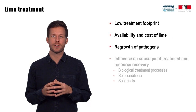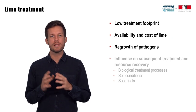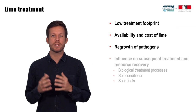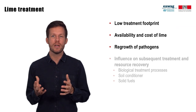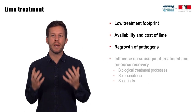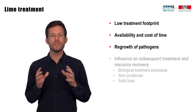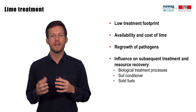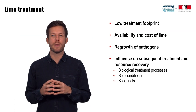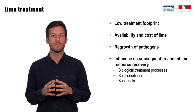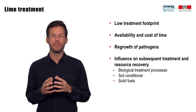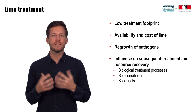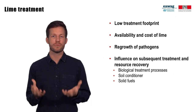Another important consideration is that lime treatment does not reduce sludge volume — in contrast to anaerobic digestion; the addition of lime actually increases the mass of sludge that needs to be managed and disposed of. It is also important to consider the characteristics of sludge following lime treatment, as it can influence subsequent treatment steps and resource recovery. Co-composting, for example, is based on microorganisms that are inhibited by lime treatment, and the high pH may not be beneficial for all soils. Lime is also inorganic and therefore does not contribute to fuel value, meaning lime treatment reduces the energy value recoverable through solid fuels.